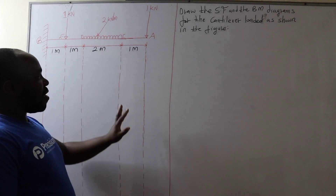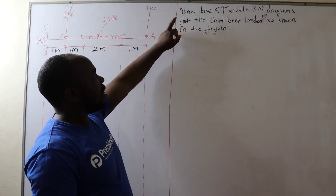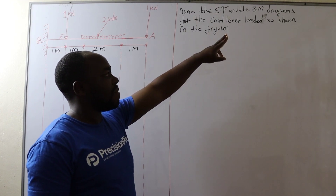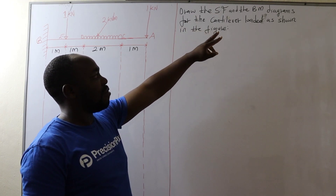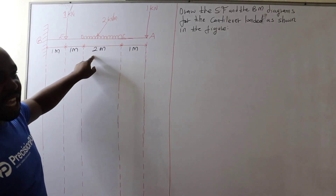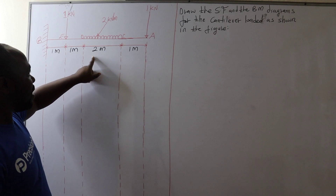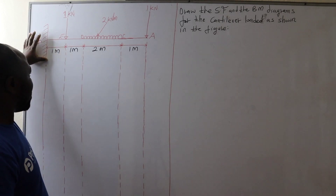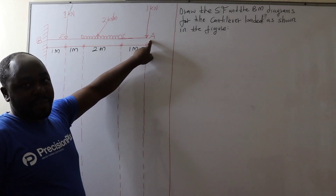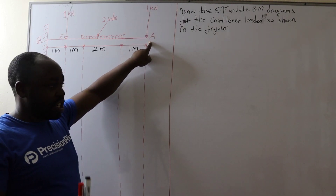Therefore our question for today is: draw the shear force and the bending moment diagrams for the cantilever loaded as shown in this figure. The cantilever is fixed at point B and at point A it is loaded with a 1 kN point load.